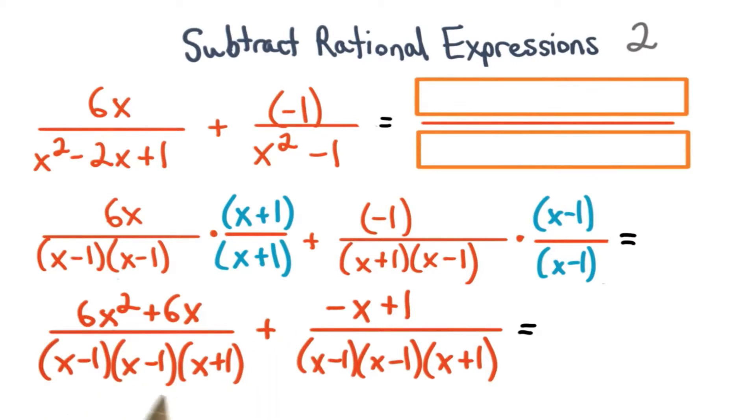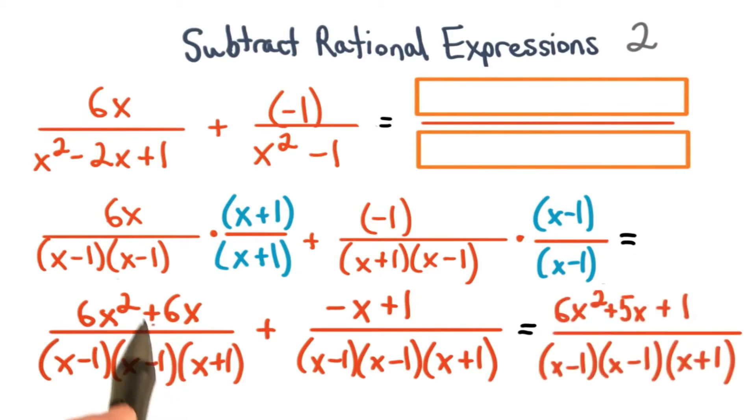Now that we have two fractions with common denominators, we can add the numerators together. We just add the like terms. When we add the like terms of 6x and negative x together, we'll get 6x squared plus 5x plus 1.